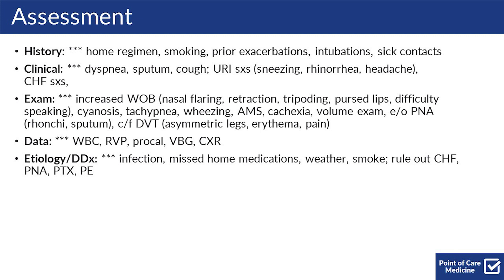Data important in making your assessment include a white count to suggest an underlying bacterial pneumonia, an RVP that might show a viral illness, a procalcitonin, a VBG, and a chest x-ray. Things to think about in the differential include infection, whether they're missing or unable to access home medications, changes in the weather, smoke exposures, and again, be thinking about ruling out CHF, pneumonia, pneumothorax, and PE.